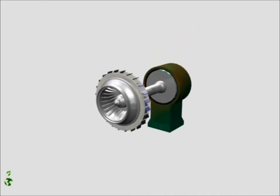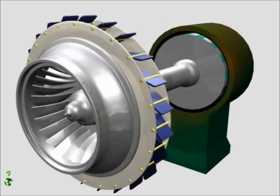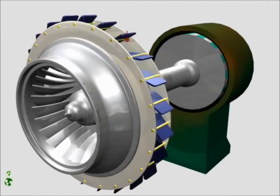The guide wheel surrounds the runner. The setting angle of the guide vanes can be adjusted to meet fluctuating power demands or to cause the turbine to spin at a constant speed at changing water levels.